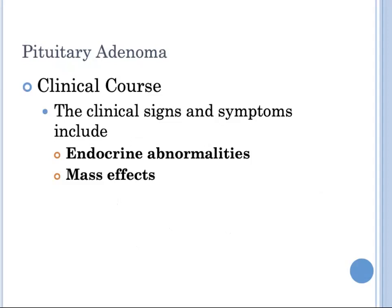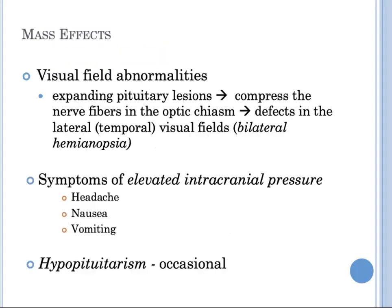The signs and symptoms of pituitary adenomas are related to endocrine abnormalities and mass effects. Mass effects include radiographic abnormalities in the sella turcica, visual field abnormalities as expanding pituitary lesions compress nerve fibers in the optic chiasm — resulting in problems in the lateral or temporal visual fields, or bitemporal hemianopsia. Mass effects can also cause symptoms of elevated intracranial pressure like headache, nausea, and vomiting, and occasionally hypopituitarism.